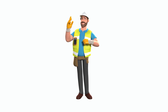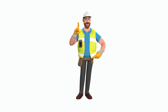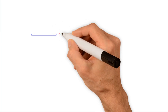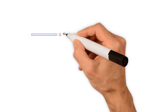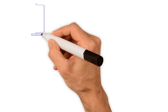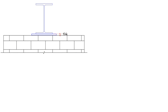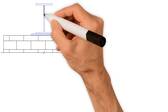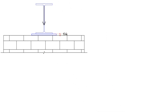Welcome back to the channel. In today's video, we'll show you how to calculate the required thickness of the bearing plate that takes the reaction of a steel beam and distributes the force over a masonry wall. Bearing plates are used to transfer concentrated compressive forces from one structural element to another. This is most commonly seen when a steel beam is supported by concrete or masonry.